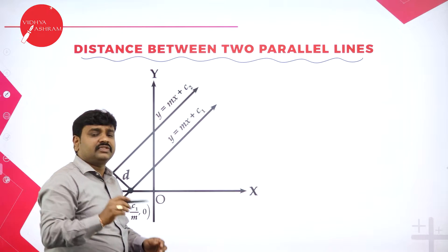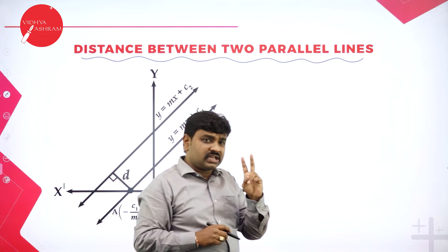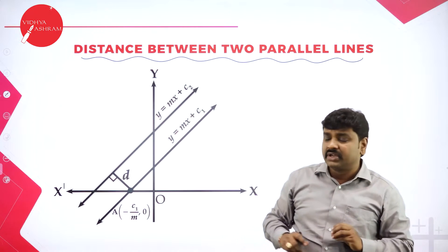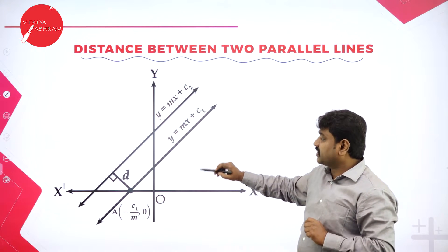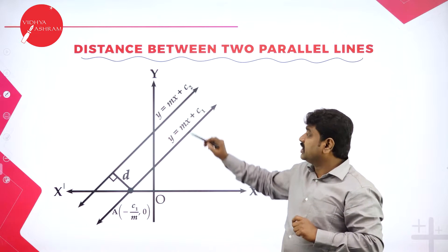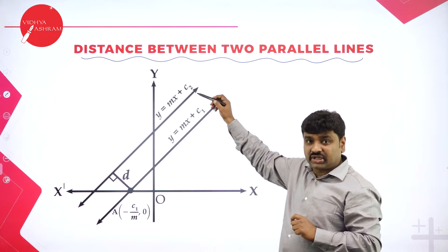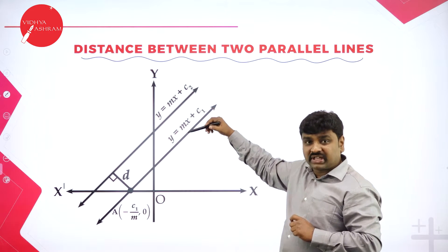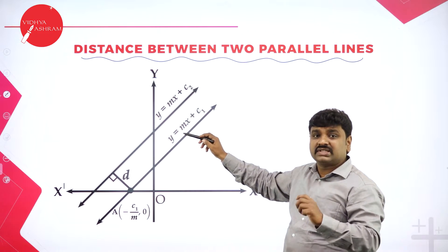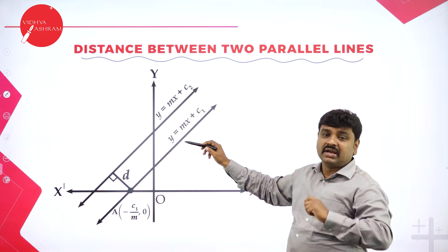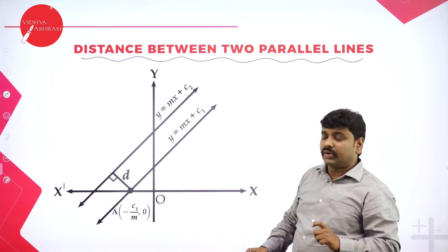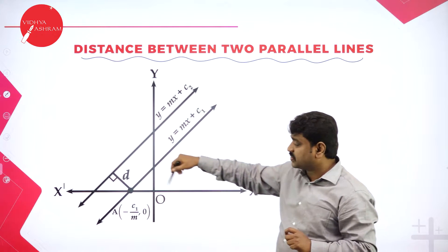What is the condition for two lines to be parallel? If two lines are parallel, then their slopes are equal. Consider two lines: first line is Y equals MX plus C1, second line is Y equals MX plus C2. In both lines the coefficient of X is the same, meaning both lines are parallel. Now I need to find the distance between them.